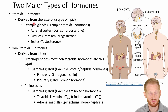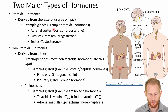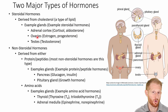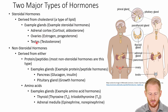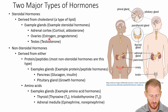For the steroidal hormones, some example glands and hormones are the adrenal cortex, which releases cortisone and aldosterone; the ovaries, which release estrogen and progesterone; and the testes, which release testosterone. Those are some important steroidal-based hormones.